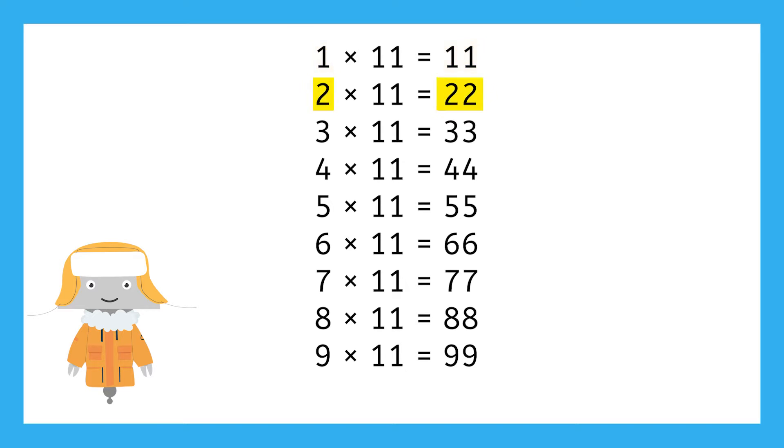Each answer has a matching pair of digits that are the same as the single-digit factor. Kind of like all the matching pairs of equipment Bevan brought. So based on that pattern of answers with matching digits, would that mean 10 times 11 equals 111? Pause here to record your thinking in your guided notes.